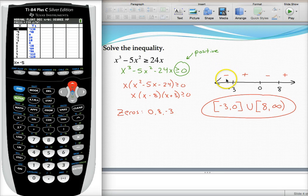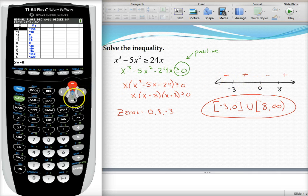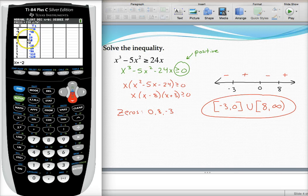Meaning if I check the graph, which I will in a second, the graph will be below the X axis in that interval. Pick a number between negative three and zero, like negative two or negative one, and I can see that my Y value is positive. My graph will be above the X axis in that interval.